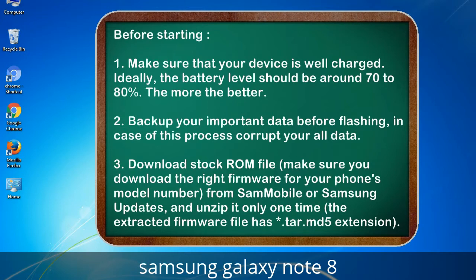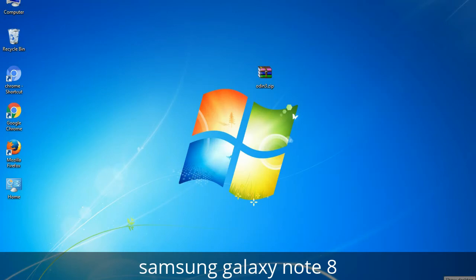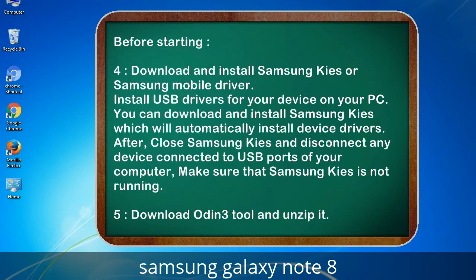3. Download the stock ROM file. Make sure you download the right firmware for your phone's model number. Download from Sammobile or Samsung updates, and unzip it only one time. The extracted firmware file has a *.tar.md5 extension.